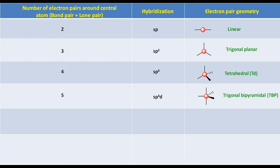If there are six electron pairs around the central atom, to find out the hybridization, write s, p, d. Put one on s, three on p, and the remaining two on d. So the hybridization will become sp3d2. The electron pair geometry will be octahedral.